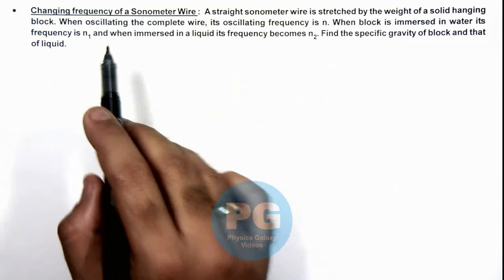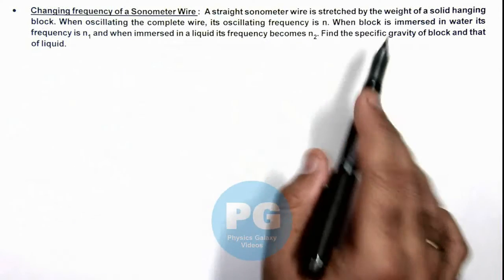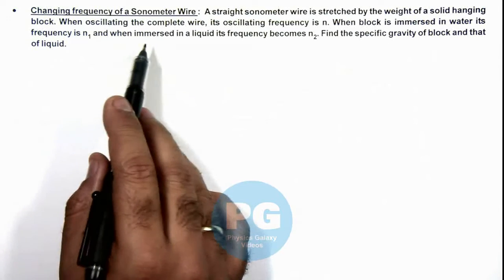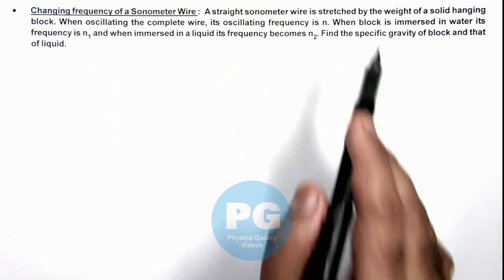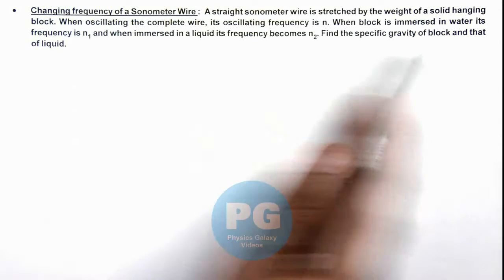When oscillating, the complete wire has frequency n. When the block is immersed in water, the frequency becomes n₁, and when immersed in another liquid, it becomes n₂. We are required to find the specific gravity of the block and that of the liquid using these data.